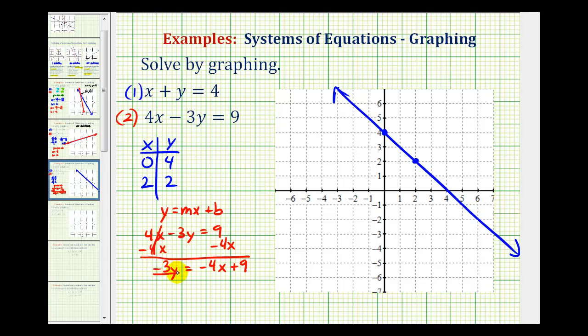Now we'll divide everything by negative three. So we'd have the equation y equals positive four-thirds x minus three.